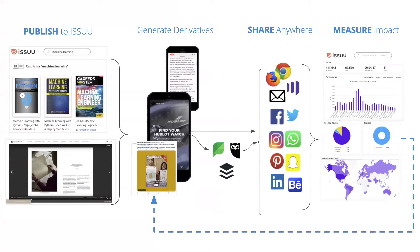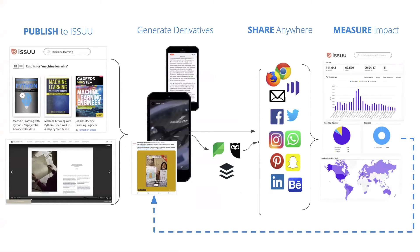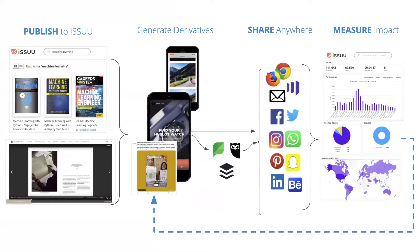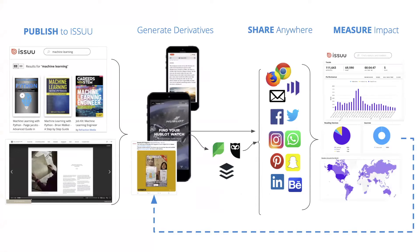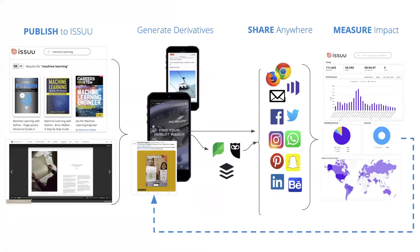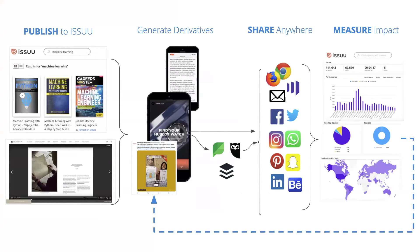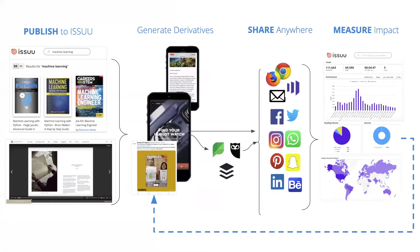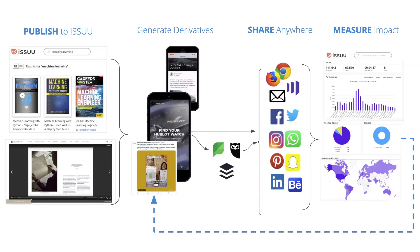How we do that — it's really just four simple steps. The first step is that you publish your content to Issue. Once you've created your content, whether in Canva, InDesign, Microsoft programs, or anything else, once you have your PDF content, you can really easily drag and drop and upload it to Issue to create a shareable link, both as a direct link or as an embeddable link on your websites.